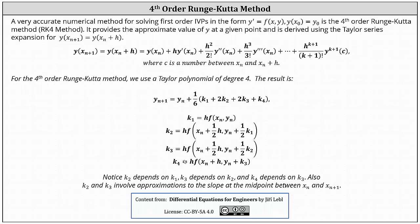Analyzing the formulas for k sub 1 through k sub 4, notice k sub 2 depends on k sub 1, k sub 3 depends on k sub 2, and k sub 4 depends on k sub 3. Also, k sub 2 and k sub 3 involve approximations to the slope at the midpoint between x sub n and x sub n plus 1, which is why we see the one-halves in the formulas.